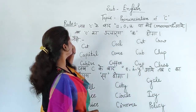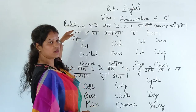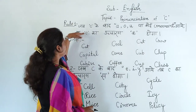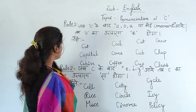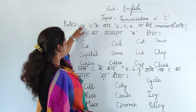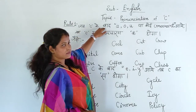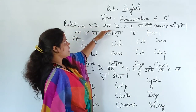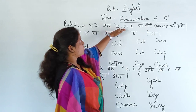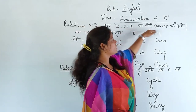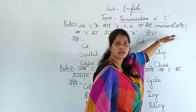Look here. I have two rules written here. First rule: when C comes after A, O, U, or a consonant...